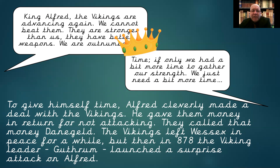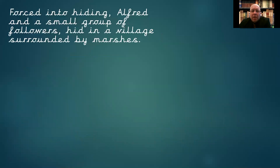They weren't quite ready yet — it wasn't a case of being fully prepared to take them on. The preparations had started but weren't complete. Because they weren't ready and because of this surprise attack, Alfred was forced to flee. His advisors, despite him wanting to stand and fight, told him and a small group of followers to run. So they went into hiding, heading out into the towns and villages. He hid in a small village surrounded by marshes, out of the way of anyone and anything.